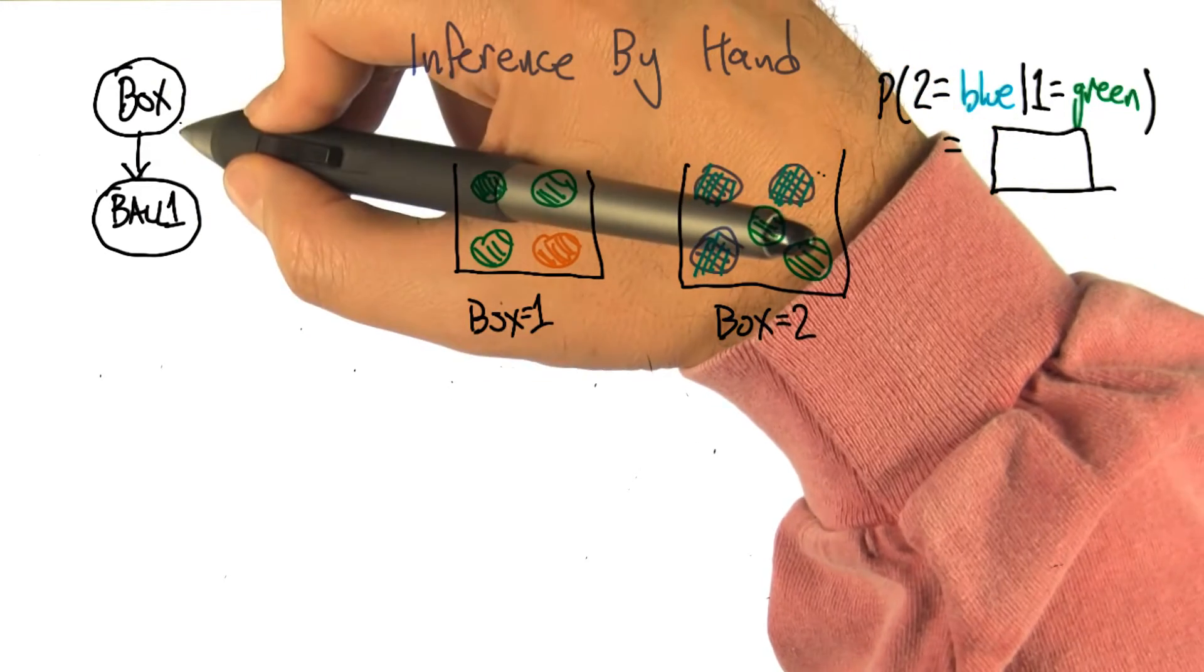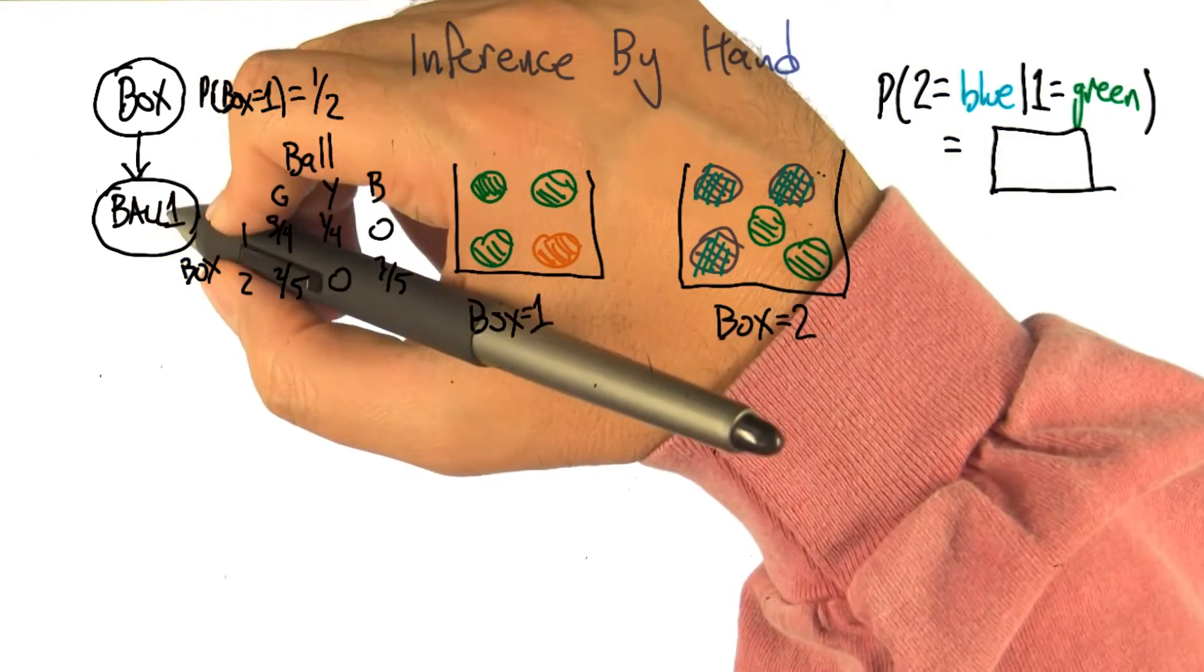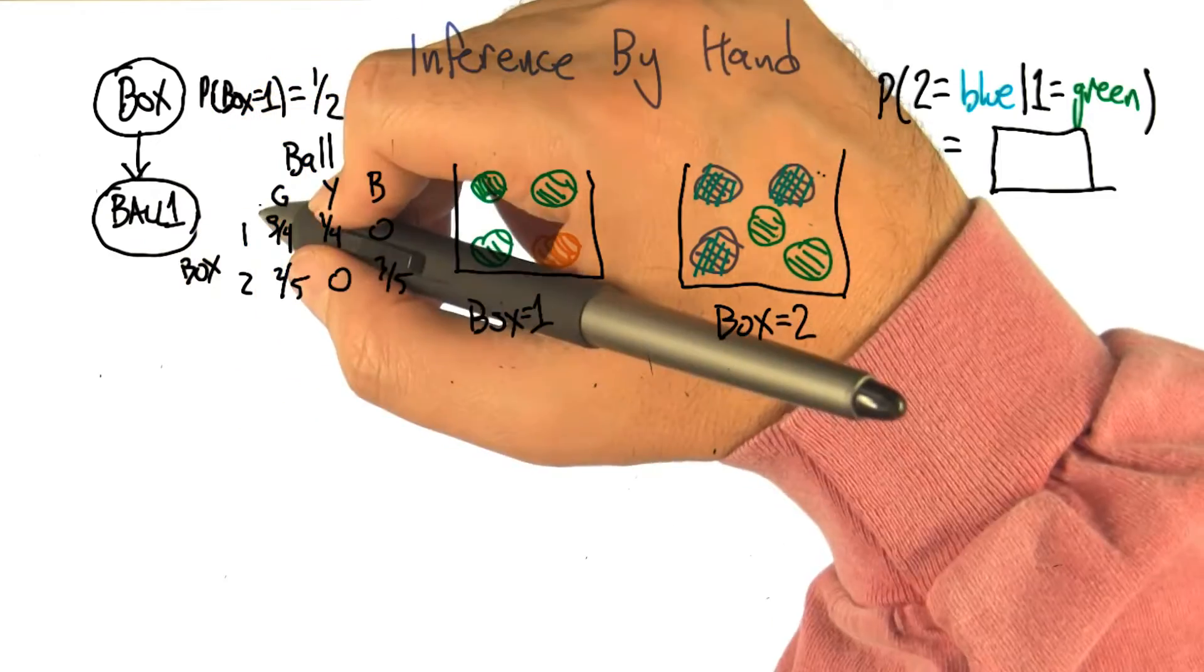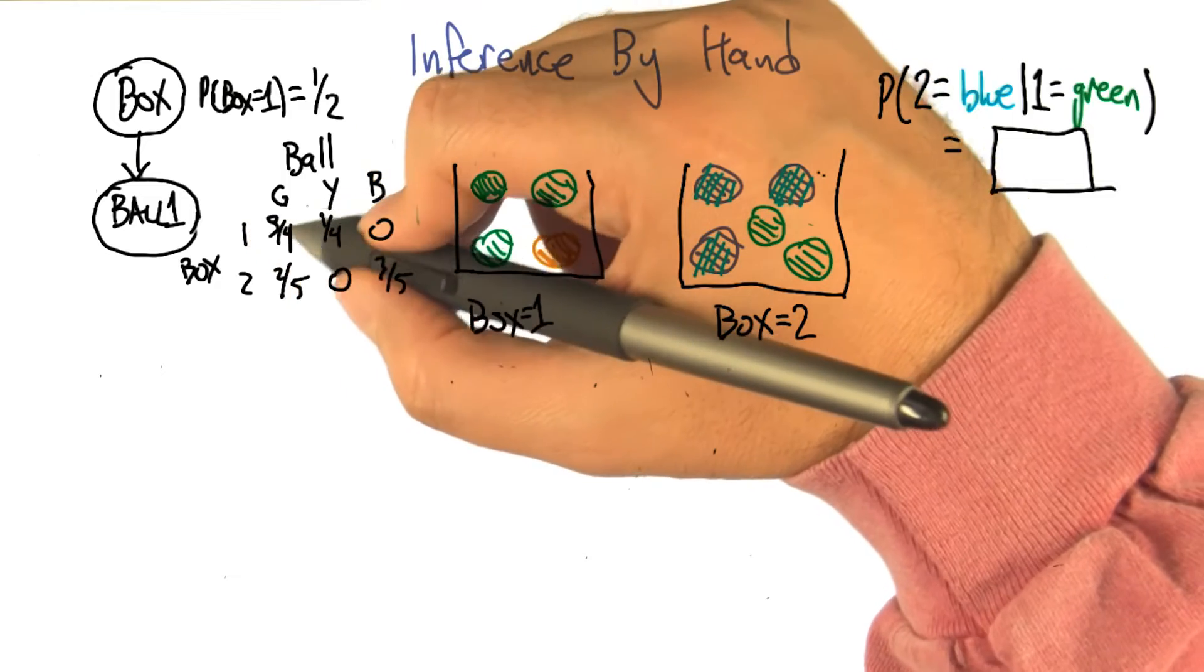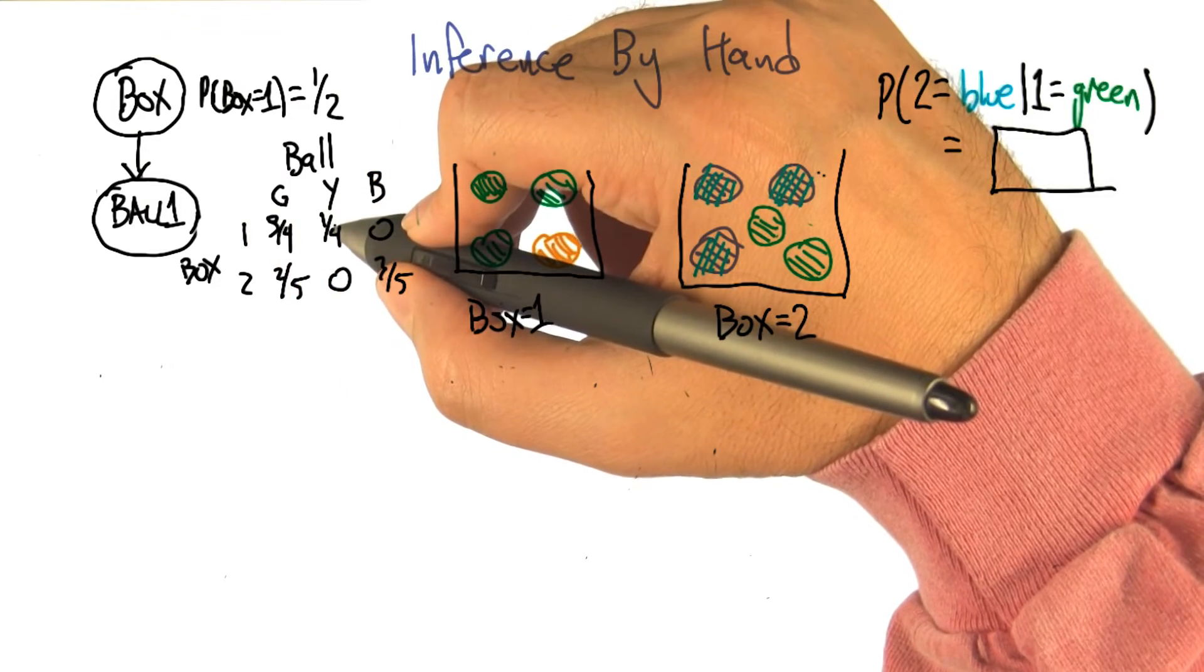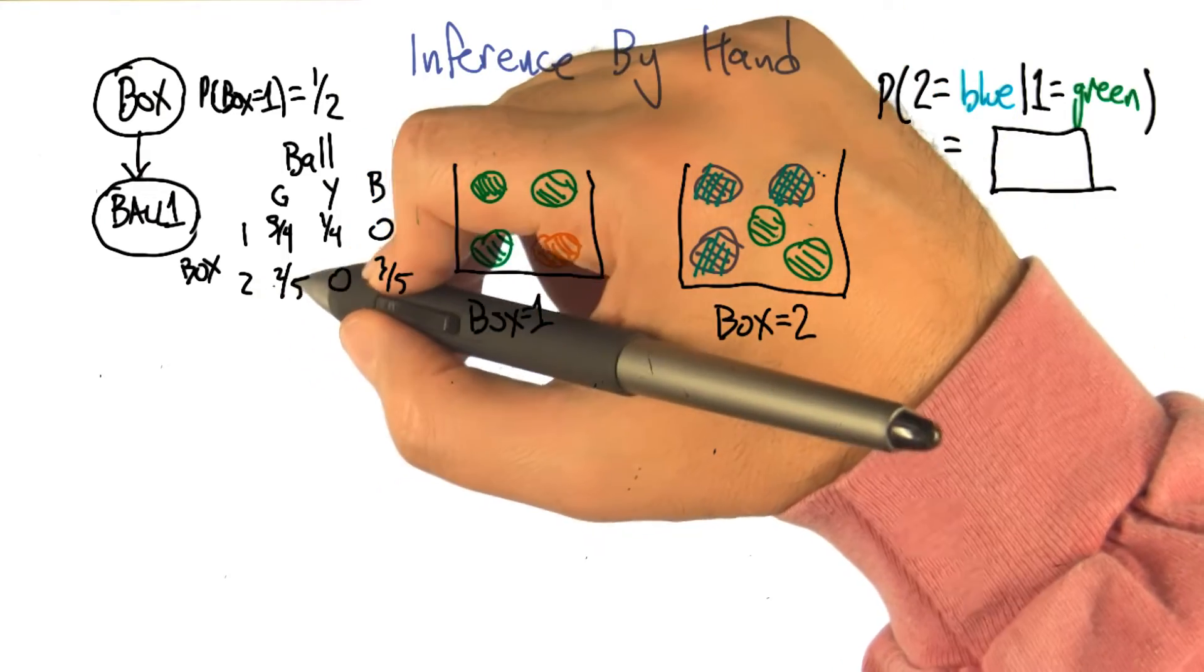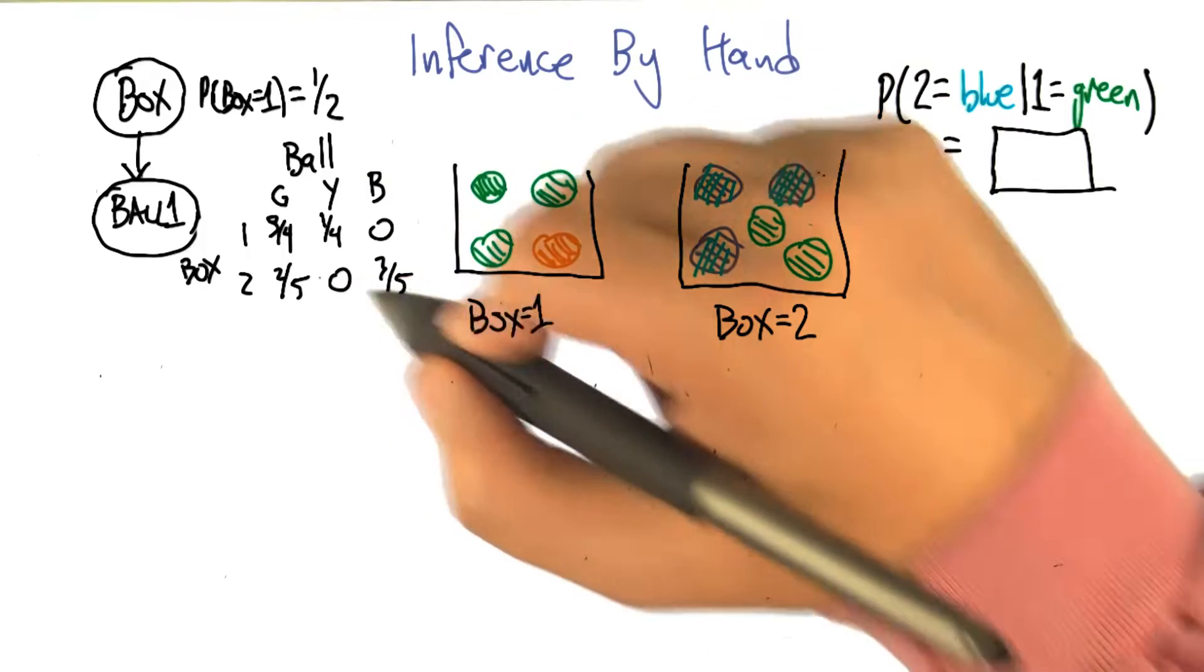And so the probabilities here are going to be, it's going to look like this. All right, so the second variable here is what color ball you get when you do the first draw from the box. And we can represent this as a conditional probability table. So for box one, it's three quarters green, one quarter yellow or orange, zero blue. And for box two, it's two fifths, zero, three fifths. And so that captures what happens on the first draw.